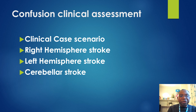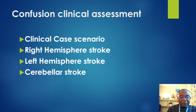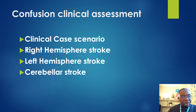I'll be presenting a clinical case scenario which will lead on to the various hemisphere strokes — the right hemisphere stroke, left hemisphere stroke, and cerebellar stroke. Our patient X is a 65-year-old brought to the A&E by his wife. He is confused and has a history of stroke which left him with visual impairment and left-sided paralysis. The instruction is to do a cognitive assessment including mental state examination. The patient has a past history suggesting right brain stroke and may have had a recent vascular event.